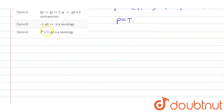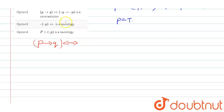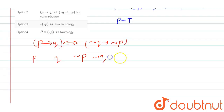Now we check option 2: p tends to q is equivalent to negation of q tends to negation of p. We set up a truth table with columns p, q, negation of p, negation of q, p tends to q, and negation of q tends to negation of p.